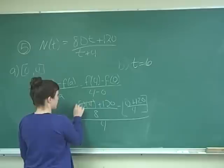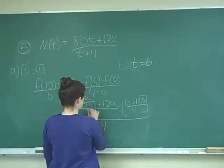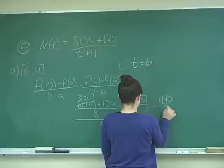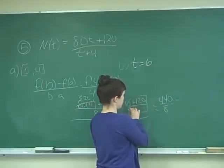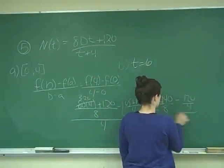So, 80 times 4 is 320 plus 120 is going to give me 420, or 440, sorry, over 8. And then minus the 0 is just going to be minus 120 over 4 all over 4.